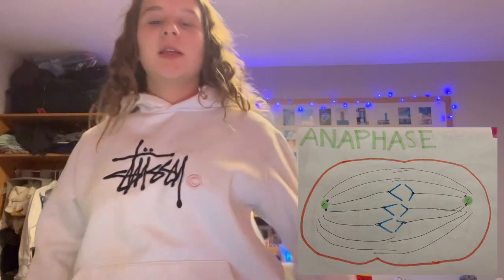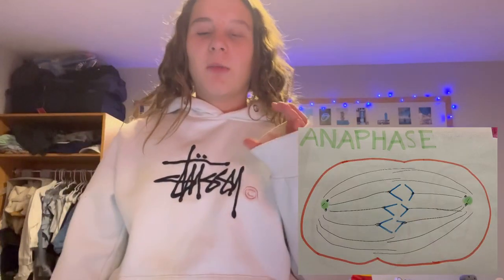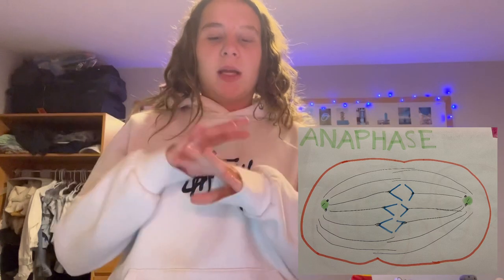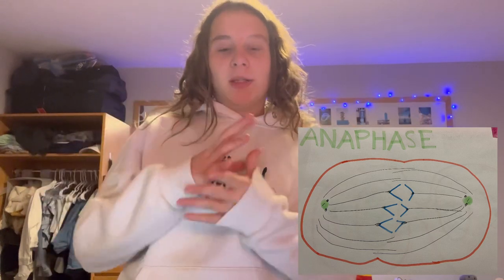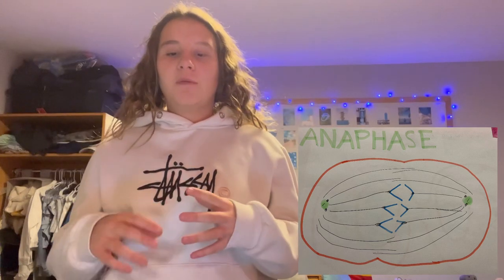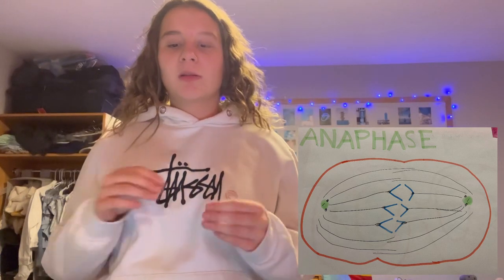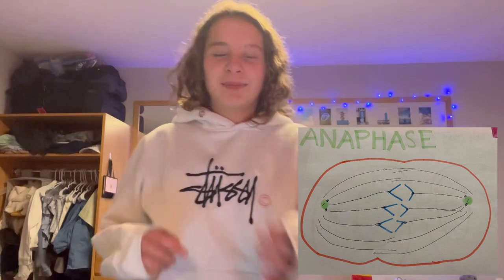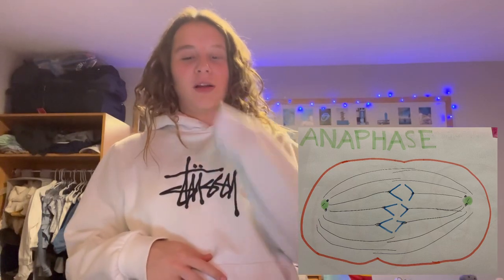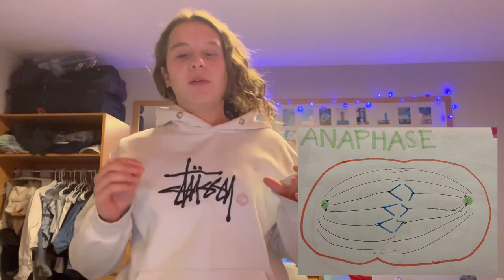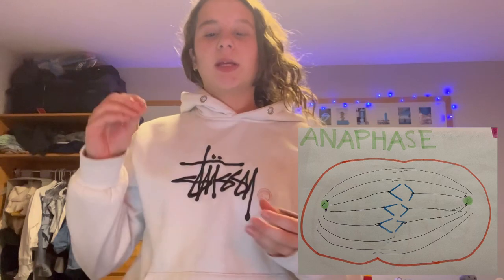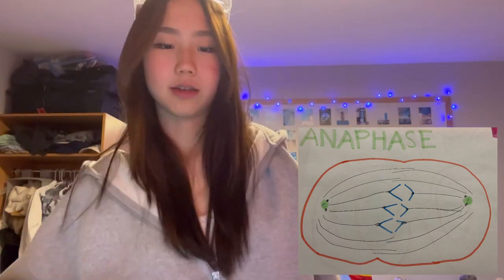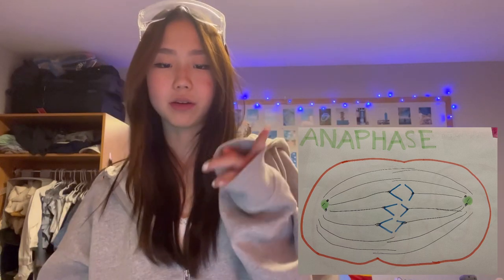In anaphase, the paired chromosomes separate and begin moving to opposite ends, called poles, of the cell. Spindle fibers not connected to chromatids lengthen and elongate the cell. At the end of anaphase, each pole contains a complete set of chromosomes.